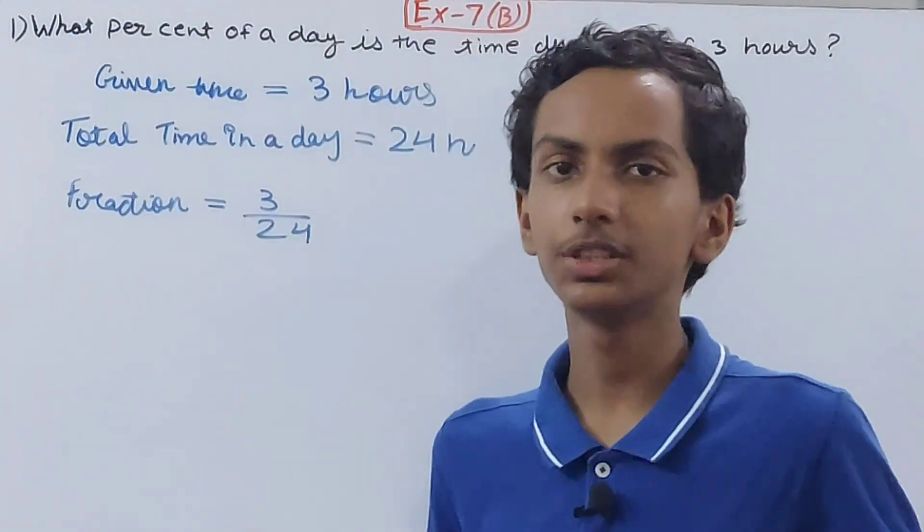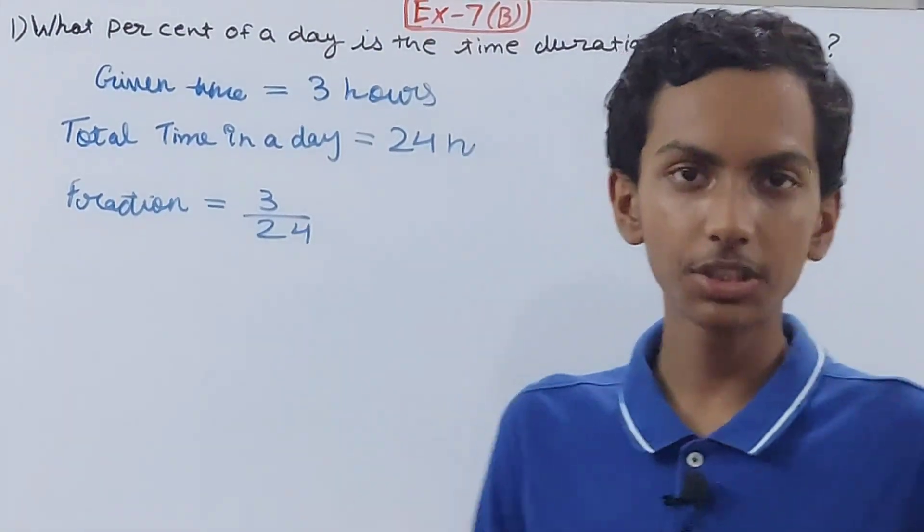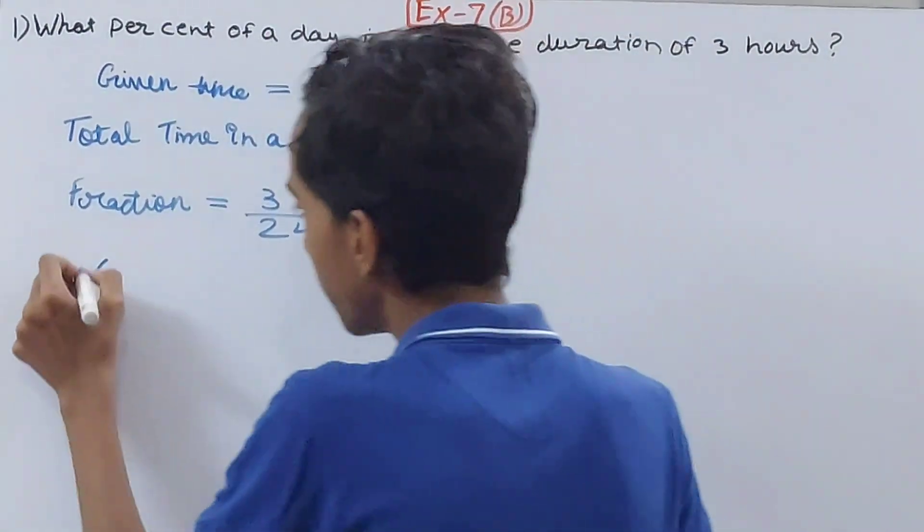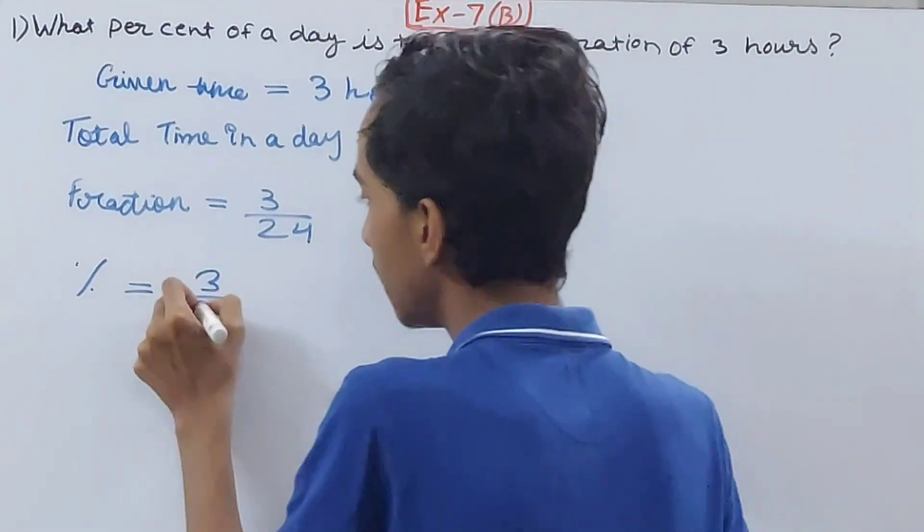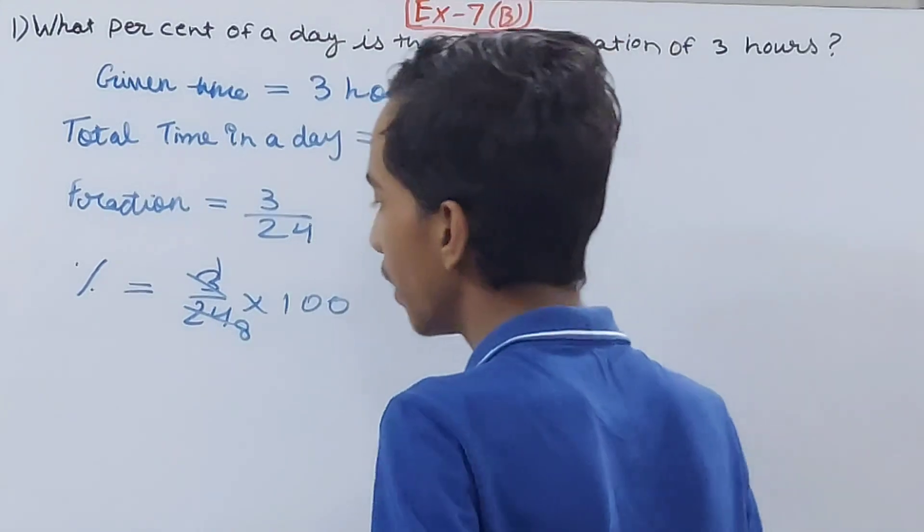This is what 3 hours means - out of 24 hours, 3 hours is represented here. And now we have to convert this into the percentage. That is quite simple, just multiply 3 upon 24 by 100.